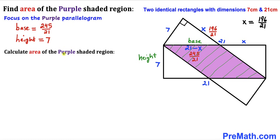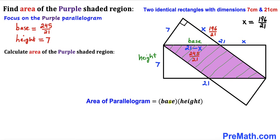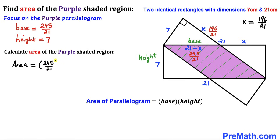Here's our final step: let's calculate the area of this purple shaded region. Recalling the area of a parallelogram formula: Area equals base times height. In our case, the base is 245/21 and the height is 7, so the area equals 245/21 times 7.